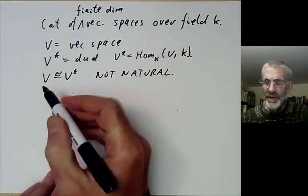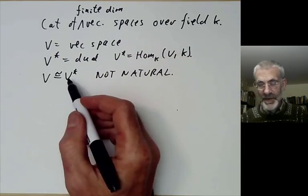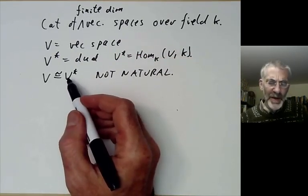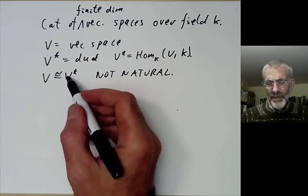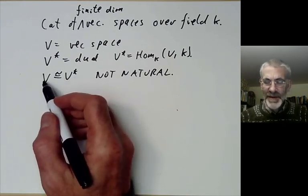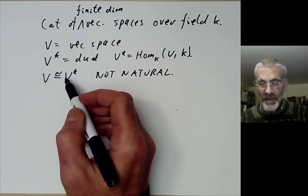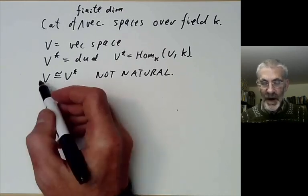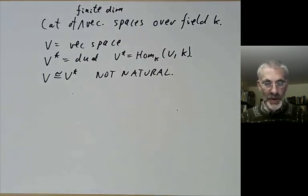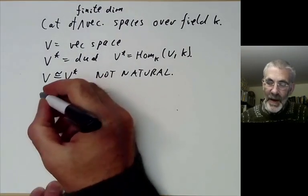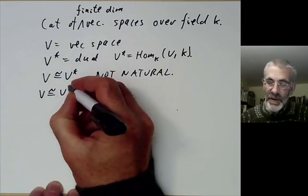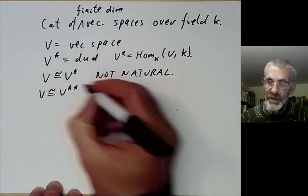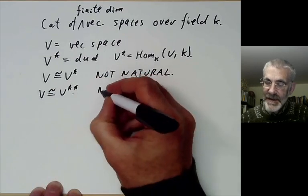In order to find an isomorphism from V to its dual, we might start by choosing a basis for V, but there are lots of different ways to choose a basis and these give you different isomorphisms from V to its dual. On the other hand, we know that V is isomorphic to the dual of the dual of V, and this is natural.